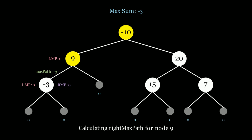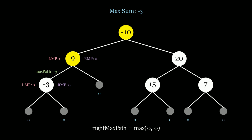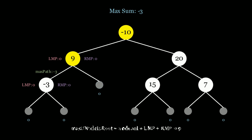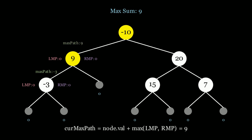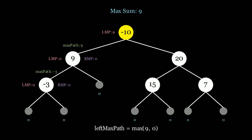At node 9 we calculate the right max path — this is the null base case, so it's 0. Now we treat node 9 as if it's the root: 9 plus 0 plus 0 equals 9. Is 9 greater than negative 3? Yes, so we update the global max sum to 9. We've now found a better path. The current max path for node 9 is 9 plus max(0, 0) equals 9. The left max path for node negative 10 is then max(9, 0), which is 9 — it's beneficial to take node 9 since it has a positive sum.